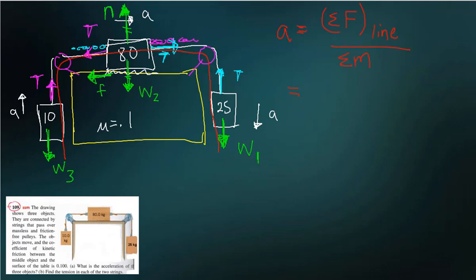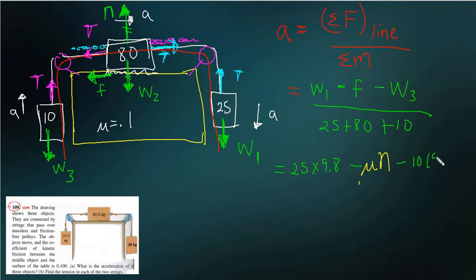So you've got the weight of this object minus tension plus tension. Don't count those because they're perpendicular minus the friction minus tension plus tension. So we don't count those minus weight three divided by everybody brings inertia to the party. And now let's plug some things in. Weight one is 25 times 9.8. Friction is mu times the normal minus 10 times 9.8 all over 90 plus 20, all over 115 kilograms.